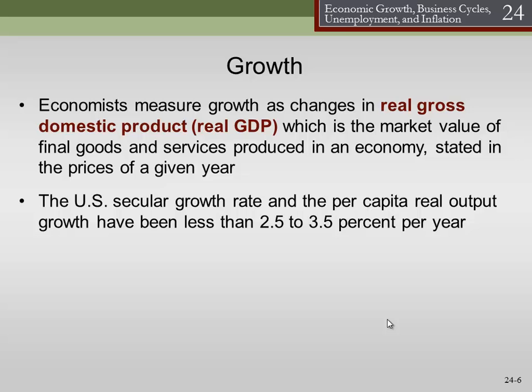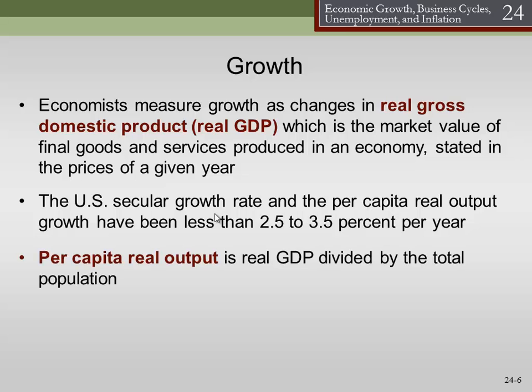The US secular — that is, long run — growth rate in per capita real output has been less than 2.5% to 3.5% per year. We average right around 3% per year if you look over the long run. Per capita real output is real GDP divided by total population.